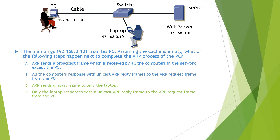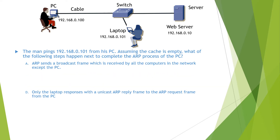Option B: All the computers respond with unicast ARP reply frames to the ARP request frame from the PC. Option C: ARP sends a unicast frame only to the laptop. Option D: Only the laptop responds with a unicast ARP reply frame to the ARP request frame from the PC. The ARP request message is a broadcast frame, and only the computer that has the specified IP address will respond with a unicast ARP reply. So the answers are A and D. You can find the detailed explanation in the video Address Resolution Protocol.